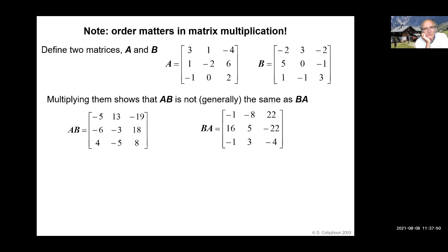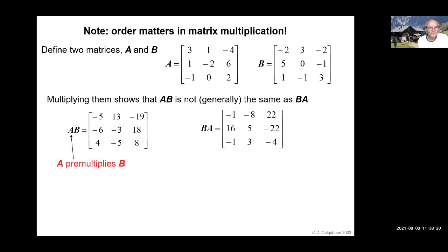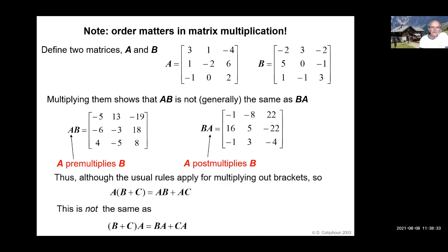Another complication when it comes to multiplication is that unlike in ordinary algebra, the order in which you do things matters. If you define two matrices A and B, multiplying them shows that A times B is one thing, but B times A is different — in general, it's different. In particular circumstances they may be the same, but in general they're different. We say A pre-multiplies B, or A post-multiplies B. You have to distinguish between those two things. So although the usual rules apply for multiplying out brackets — A(B+C) equals that — that's not the same as if the A came after the bracket, because that reverses the order of the multiplication.